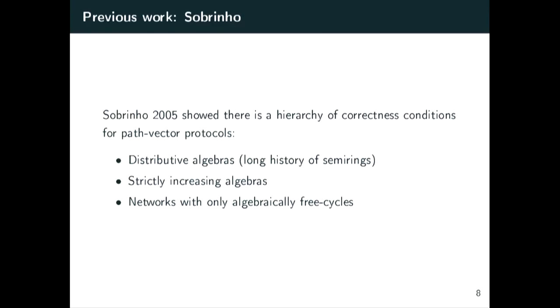Thankfully, Sabrino in 2005 showed there is a hierarchy of correctness conditions for path vector protocols. At the top are distributive algebras, discussed in the long history of semiring routing. In the middle are strictly increasing algebras. At the bottom are networks with only algebraically free cycles. We claim that for most path vector routing protocols, what you're looking for is strictly increasing algebras—the Goldilocks condition. Not too strong like distributive algebras, and not too weak like networks with only algebraically free cycles.